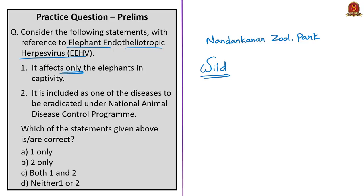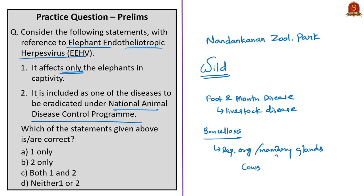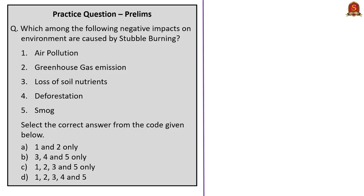Foot and mouth disease is a livestock disease affecting cows, buffaloes, goats, sheep and other animals. Brucellosis is a disease affecting reproductive organs and mammary glands of cows and buffaloes. EEHV is not included in the National Animal Disease Control Program. Since both statements are incorrect, the correct answer is option D — neither one nor two.